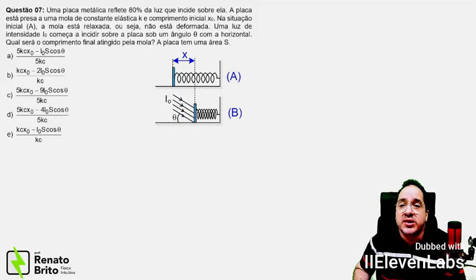A metal plate reflects 80% of the light that falls on it. The plate is attached to a spring with an elastic constant K, initially relaxed, with an initial length X0. Light with intensity I0 begins to fall on the plate at an angle theta with the horizontal. What will be the final length reached by the spring in the final position of static equilibrium?